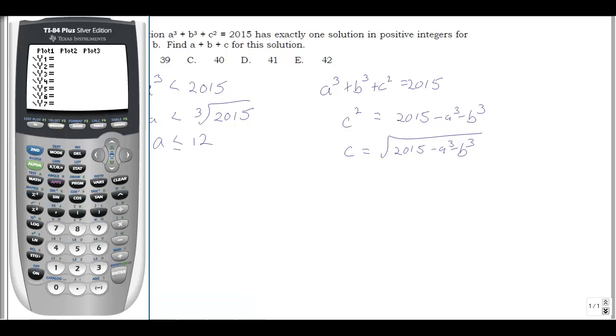c is then the square root of 2015 minus a cubed minus b cubed. So what we get here, I'm going to put in square root 2015. Now I'm going to assume a is 12 first, and then I'll have to go back and change that to 11. But I can use for b, I can use x.